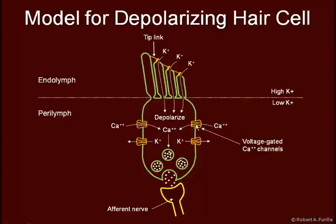These are voltage-gated calcium channels. When the membrane depolarizes, these open and calcium moves in. Calcium is absolutely necessary for exocytosis—in the absence of calcium, exocytosis does not occur. Calcium is then responsible for the release of neurotransmitter, which stimulates the afferent neuron leading to the cochlear nerve. As potassium is brought in, it then leaves from a region of high concentration to a region of low concentration out through these potassium channels.